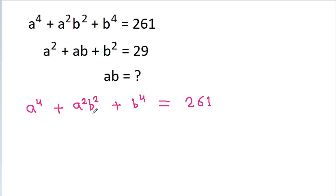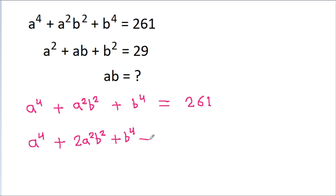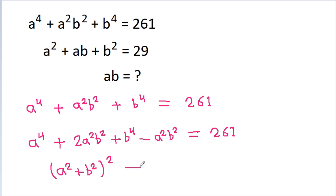If we add a²b² here, we have a⁴ + a²b², and adding another a²b² gives 2a²b² + b⁴, then we subtract a²b², so the expression becomes a⁴ + 2a²b² + b⁴ − a²b², which equals (a² + b²)² − (ab)², all equal to 261.